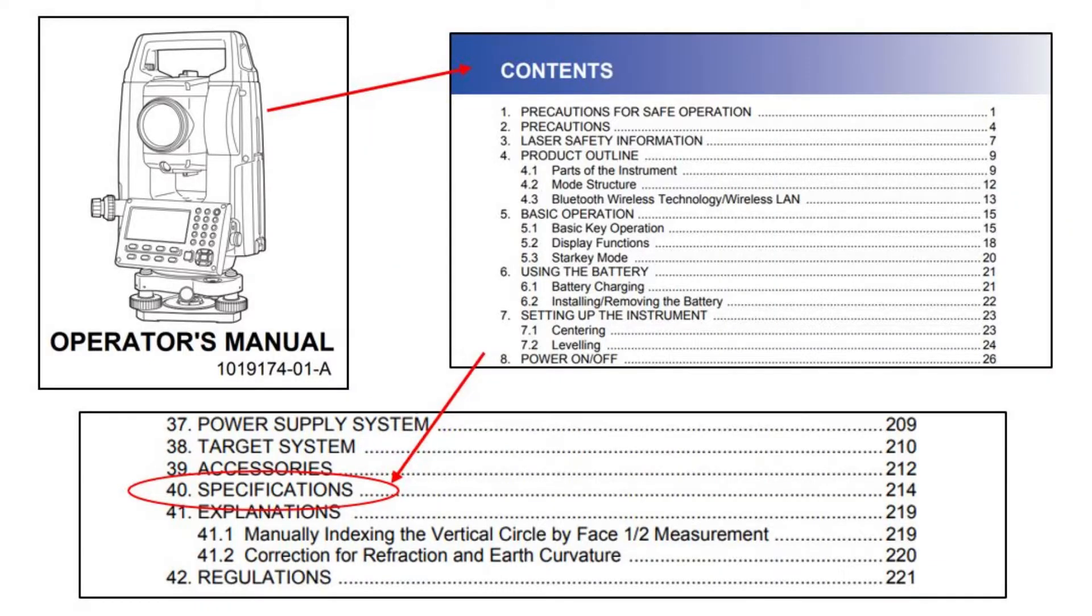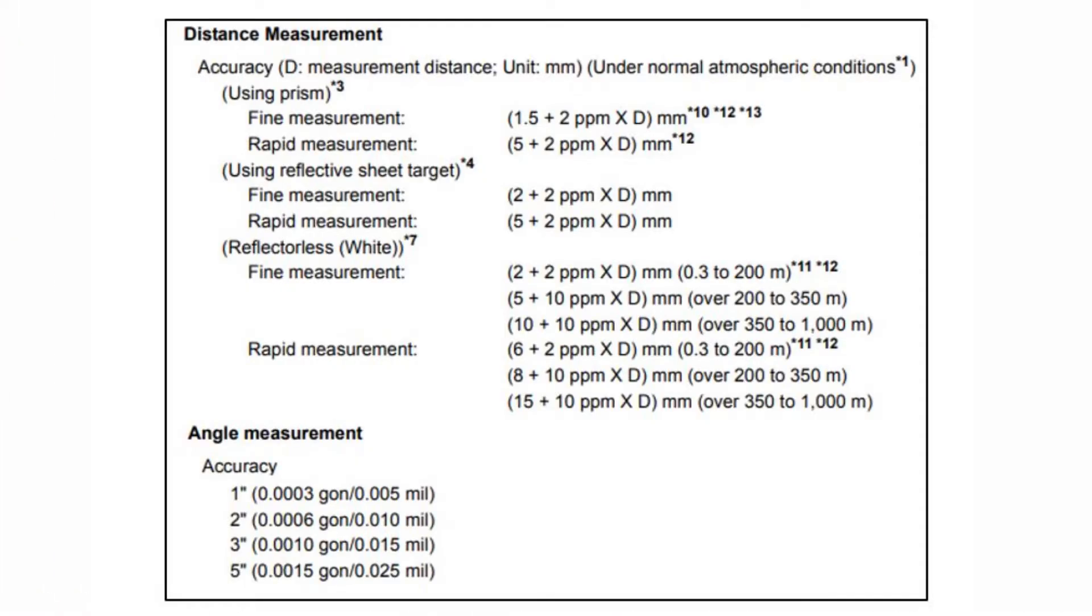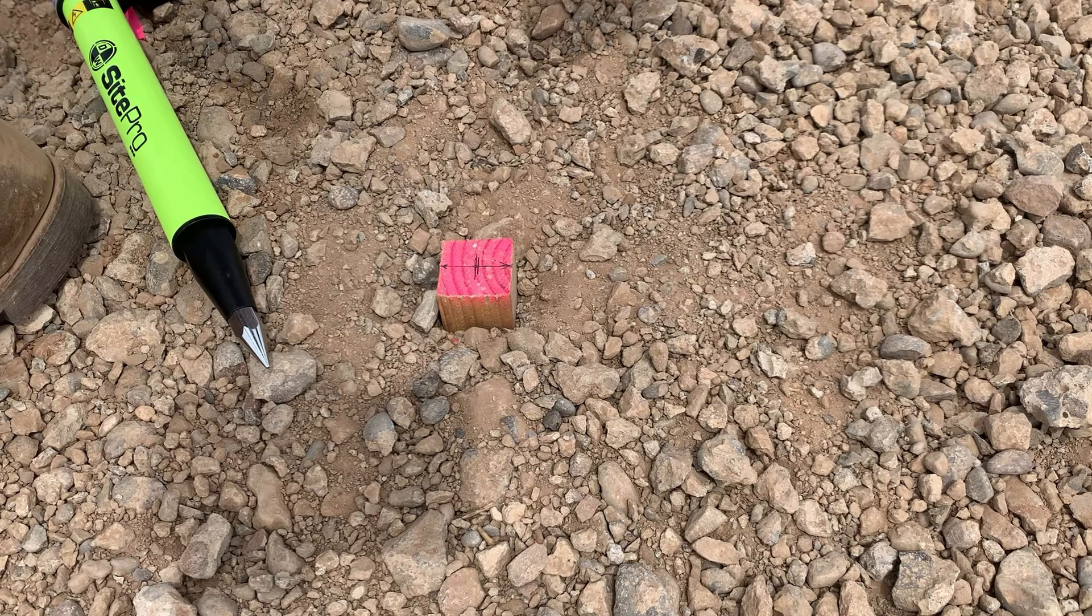If you think your instrument is measuring out perfectly to the thousandth, I recommend you consult the specifications for distance measurement in your user's manual, as this is rarely the case, regardless of the accuracy claimed on your digital display. That's why this exercise is so important.